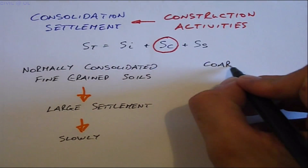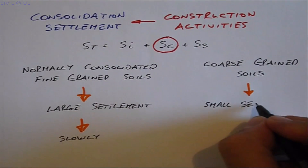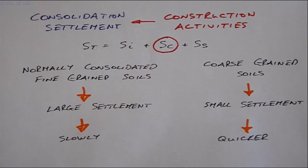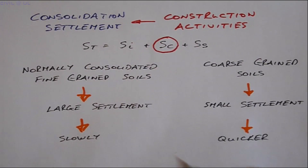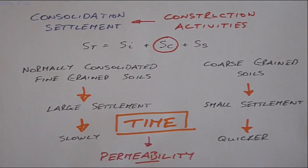Settlement in coarse grain soils, on the other hand, generally are smaller and take place in a much quicker time, often during construction, so they may be of much less of a concern. We can infer from this that consolidation settlement is a time-dependent process and therefore is controlled by the permeability of the soil.